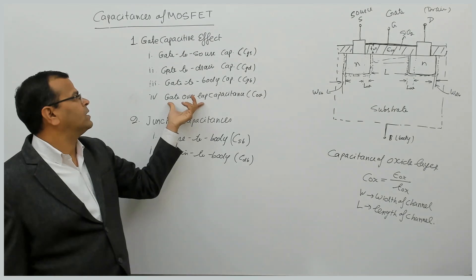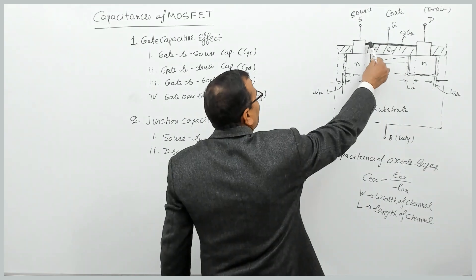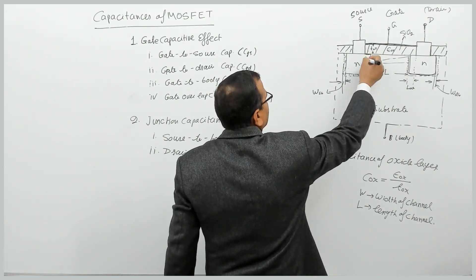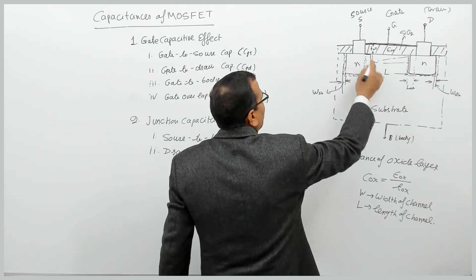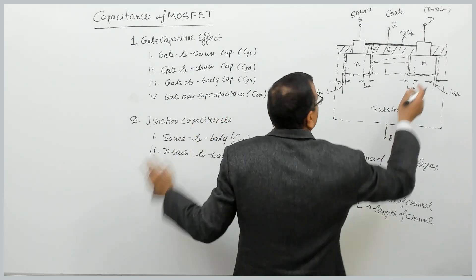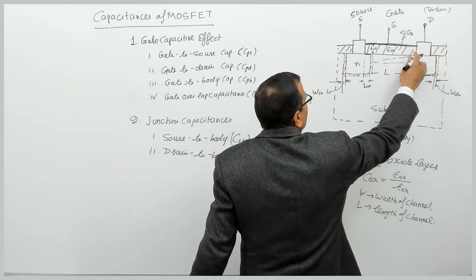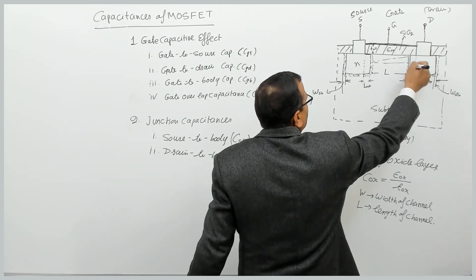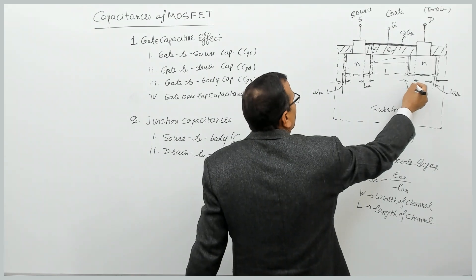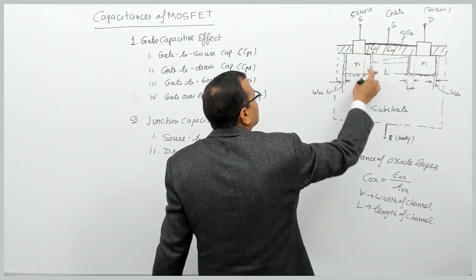There is also a gate overlap capacitance. The gate electrode overlaps slightly with the source region — this small area of overlap gives rise to a capacitance called the gate overlap capacitance. Similarly, there is an area of overlap between the gate and the drain region. Assuming the device is symmetrical, the overlap area between gate and drain equals that between gate and source.